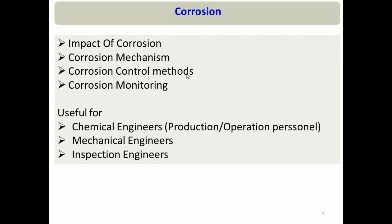This lecture series will be useful for production and operation personnel. In production, to avoid corrosion we dose corrosion inhibitors, neutralizers, and do water washing. We need to understand what impact increasing or decreasing the rate of neutralizer dosing has — in other words, what the impact of pH is.